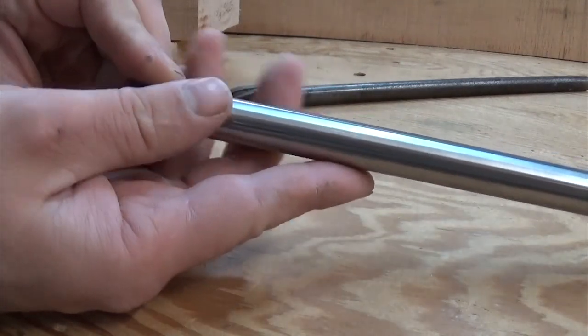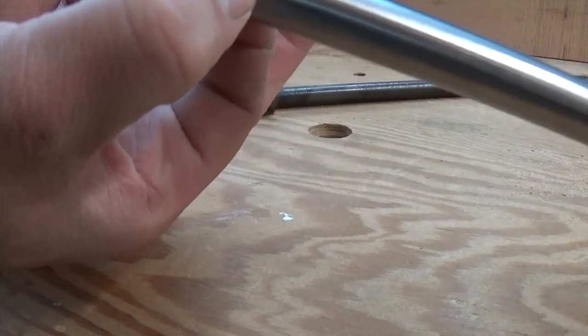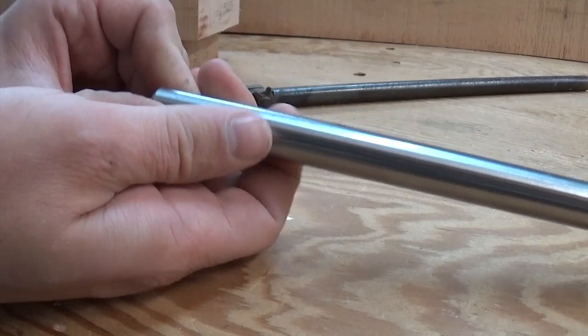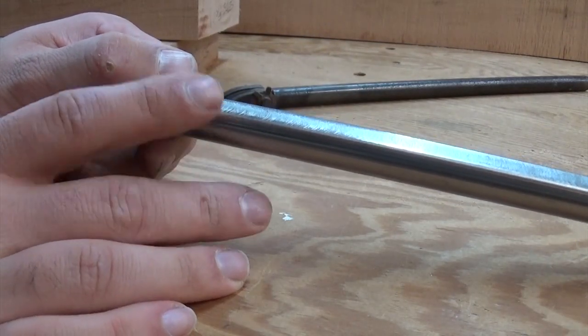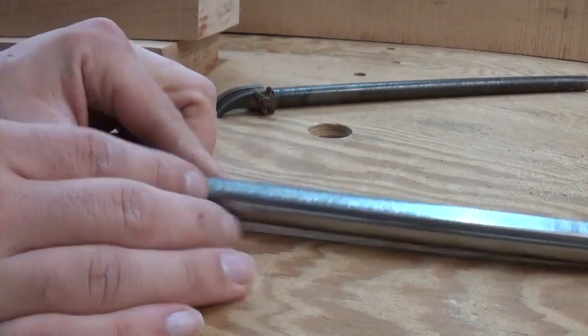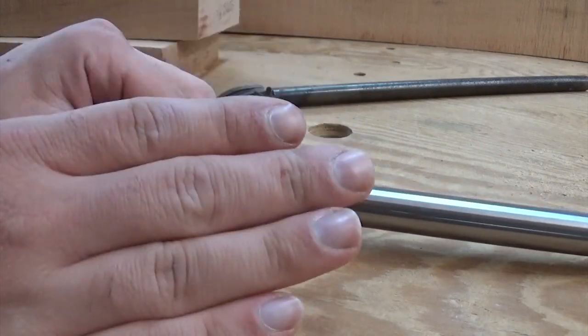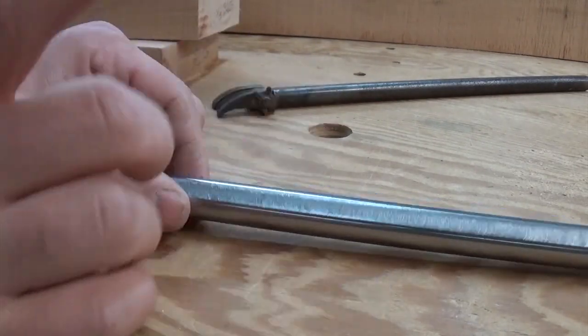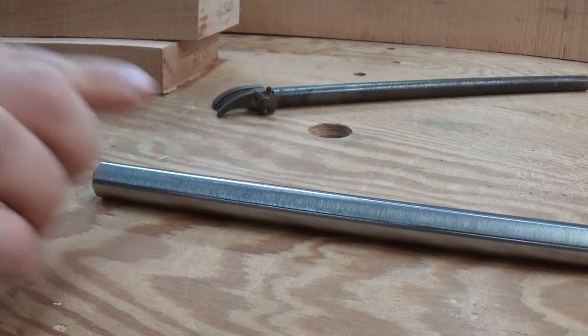This bar is 5/8 D-shaft from McMaster Carr. And all that means is it's 5/8 diameter ground rod that has this flat spot milled in it. You could, in theory, buy just cold rolled steel, the right diameter, and then file a flat spot into it. But that's not going to be a lot of fun, and it's probably not going to be as accurate as this. And the price difference between this with the flat milled in it and just round bar was really, really small. So it's, in my opinion, well worth the money to have them machine the flat spot in and be done with it.